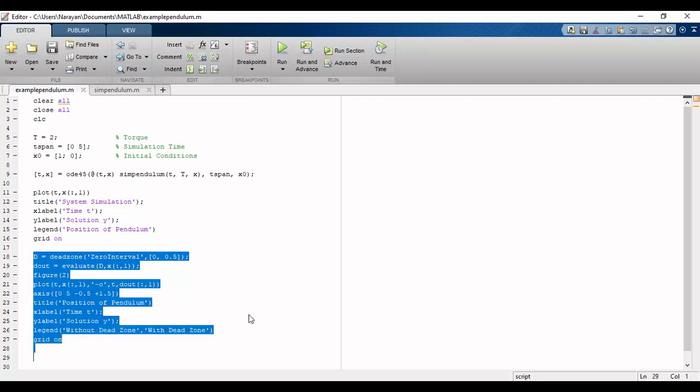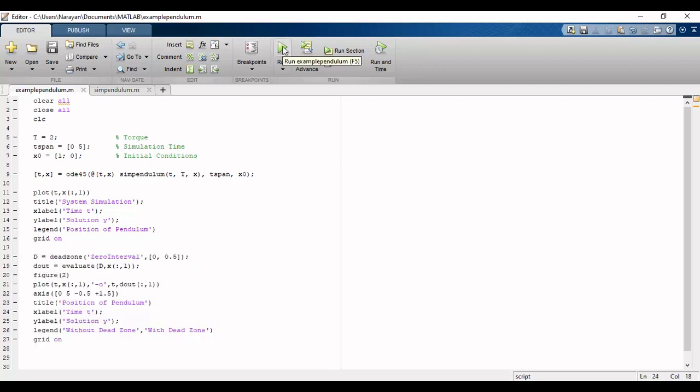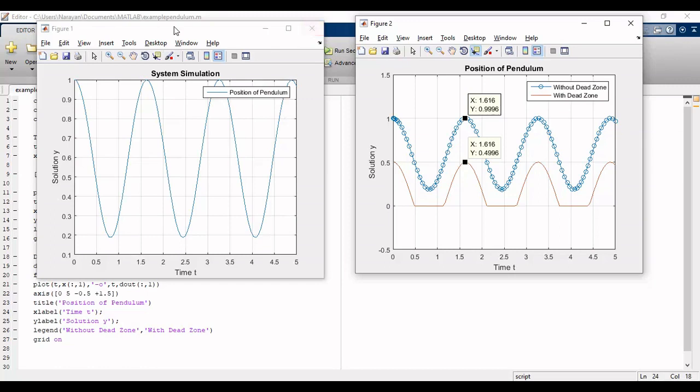Now we will run the simulation and analyze the response. The first graph represents position of the simple pendulum, where the second graph represents position of the simple pendulum with and without dead zone effect.